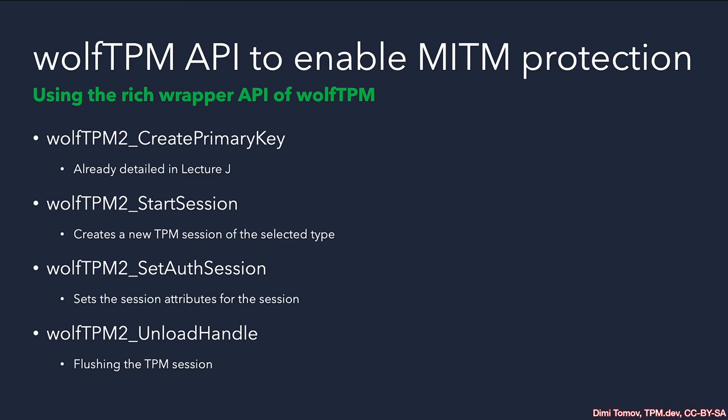The first one creates a new TPM session, and the second helps us set the proper attributes to enable parameter encryption. The last API, which you are probably already familiar with, is `wolfTPM2_UnloadHandle`, which takes an index of a valid TPM handle and flushes the TPM object.